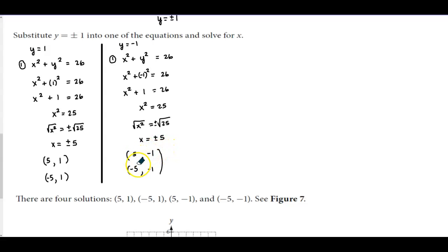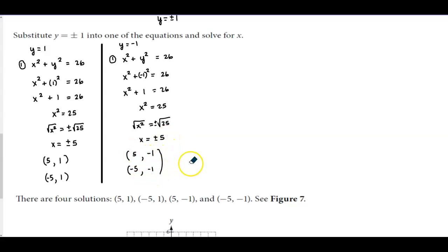Our x-coordinates are again 5 and −5, but our y-coordinate is −1 because that is what we substituted into the equation. So we get two more ordered pairs: (5, −1) and (−5, −1).